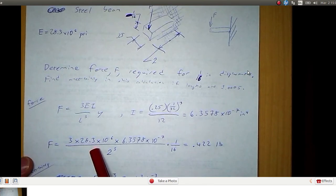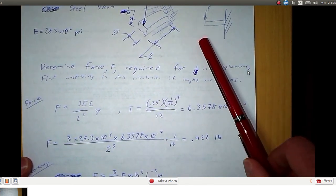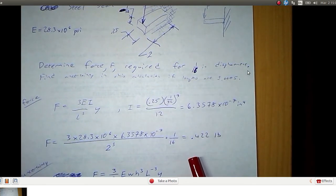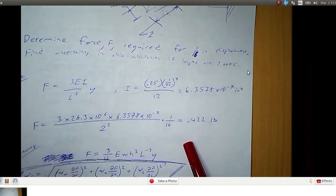Now we can substitute in all the values for force and we come up with 0.422 pounds is going to make this beam deflect a sixteenth of an inch. Now what's the uncertainty in that calculation?